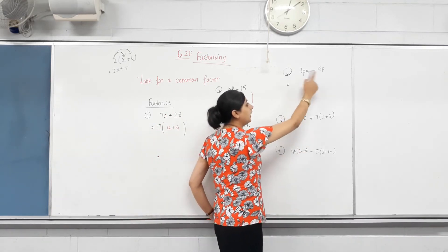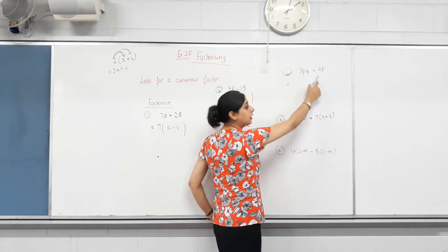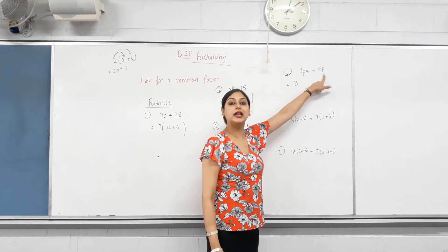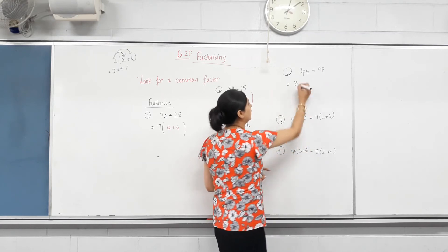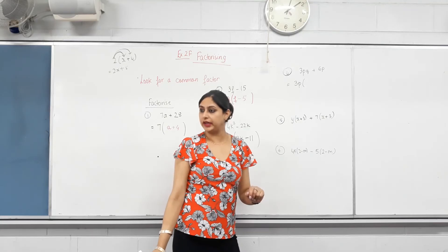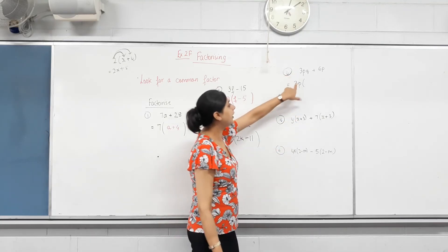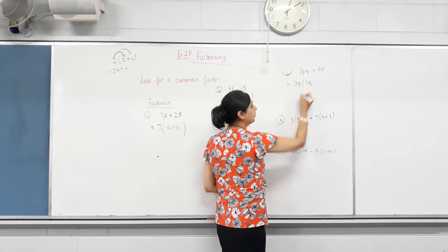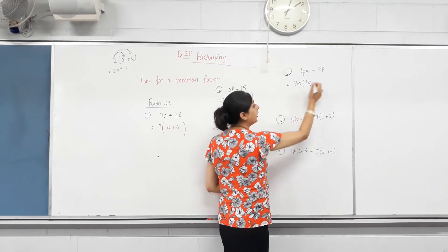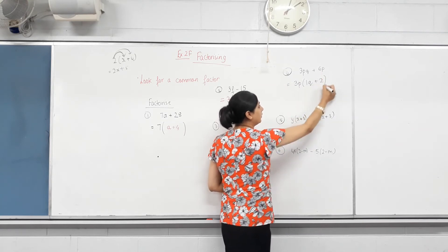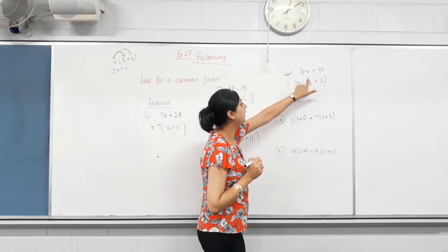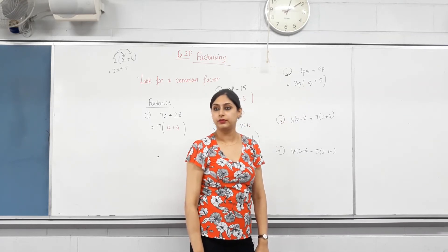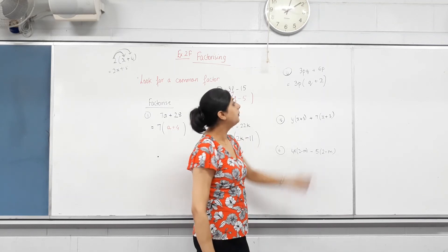Next one: 3pq + 6p. The common factor of 3 and 6 is 3. Now for the letters — this term has p and q, this term only has p. The letter p is common to both. So the highest common factor is 3p. Inside the bracket: 3pq divided by 3p — three divided by three is one and p divided by p leaves one, so q remains. Then 6p divided by 3p gives 2. Answer: 3p(q + 2).